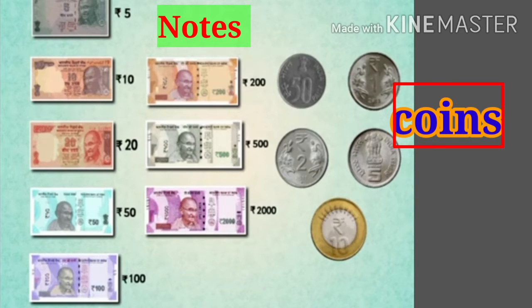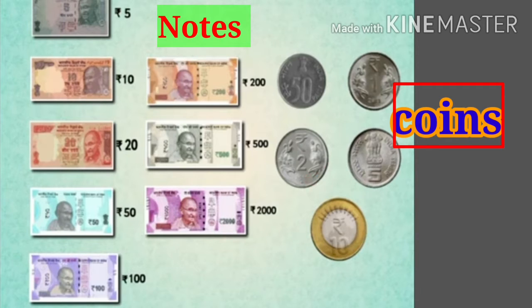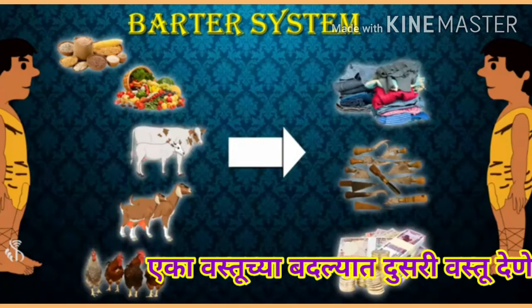Now let's learn about coins. Fifty paise coin. One rupee coin. Two rupees coin. Five rupees coin. Ten rupees coin.